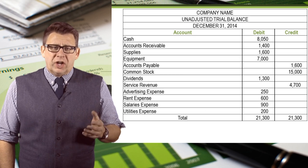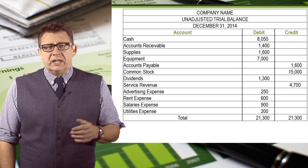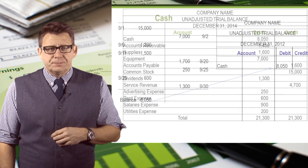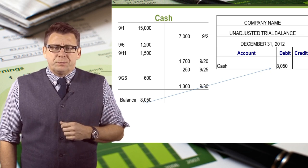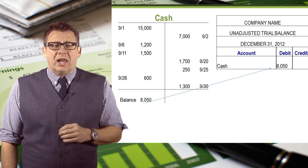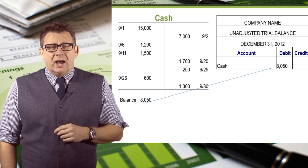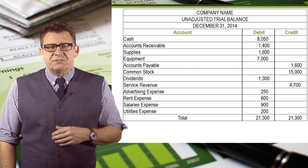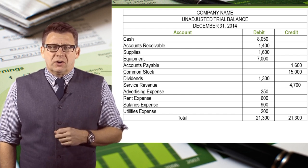Now here's an example of a trial balance. Notice the account order is assets, liabilities, equity, revenues, and finally expenses. Let's look at the details as to how we arrived at these balances. In this example, all of the debits totaled $18,300 and all of the credits totaled $10,250. Therefore, the cash account has a debit balance of $8,050. So on the trial balance, we would enter cash as the first account and $8,050 in the debit column. Then we would repeat this process for all of the other accounts that have balances.